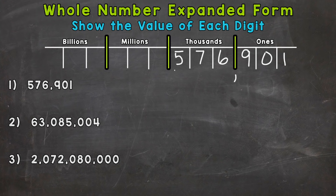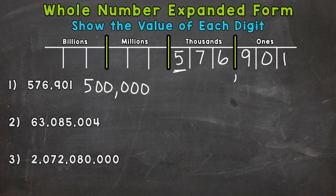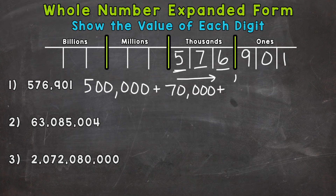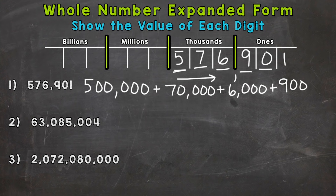We're going to start with the greatest valued digit — the digit furthest to the left, this five. We need to think: how much is that five worth? It is worth 500,000, so that's what we start with. Then we just work our way to the right. Plus the value of the seven — that's in the 10,000s place, so it has a value of 70,000. Plus our six is in the thousands place, so it has a value of 6,000. Plus the nine is in the hundreds place, so it has a value of 900. We have a zero in the tens place — we don't need to represent that zero in expanded form. So we go to the next digit: a one in the ones place with a value of one. And now we have number one in expanded form.